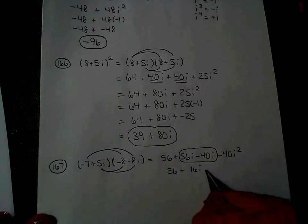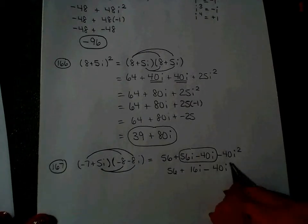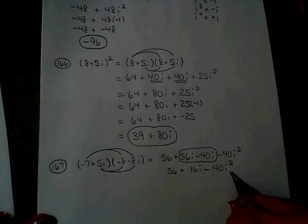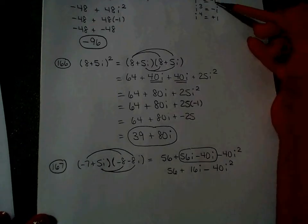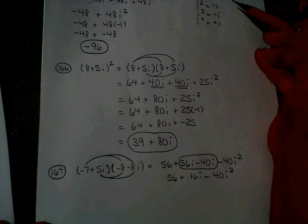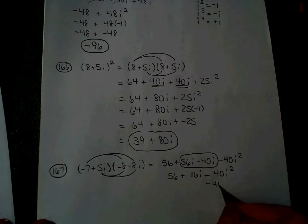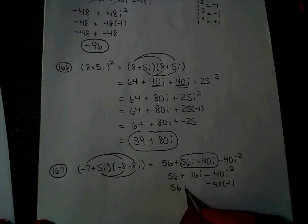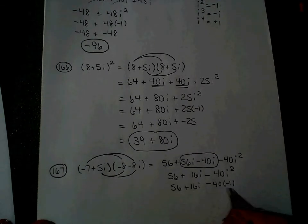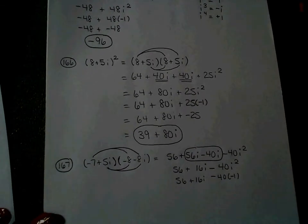I cannot have a power of i bigger than first power, so I look up here. i squared is negative 1, so I replace that with negative 1. The negative negative makes that a positive 40.